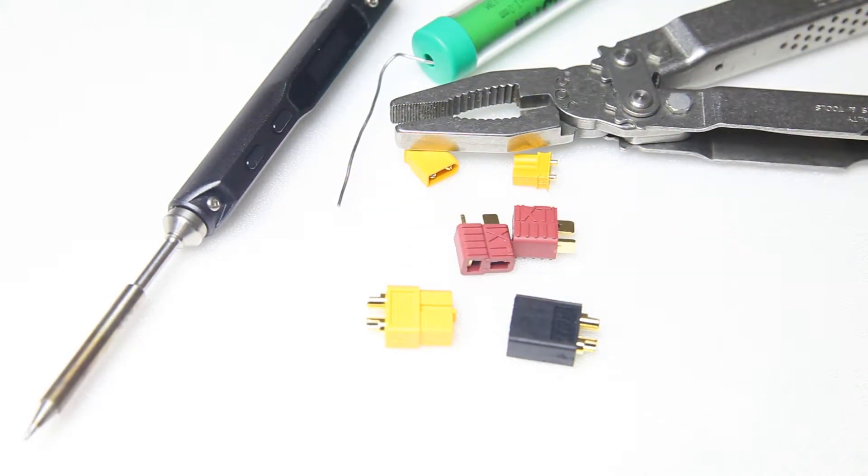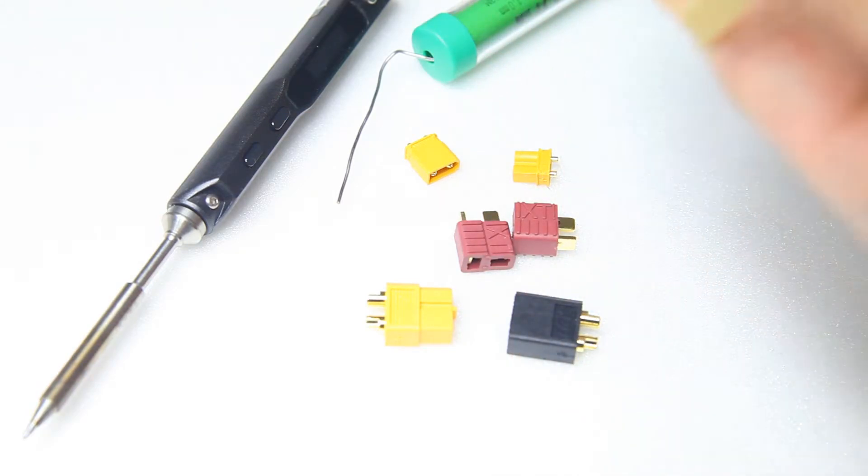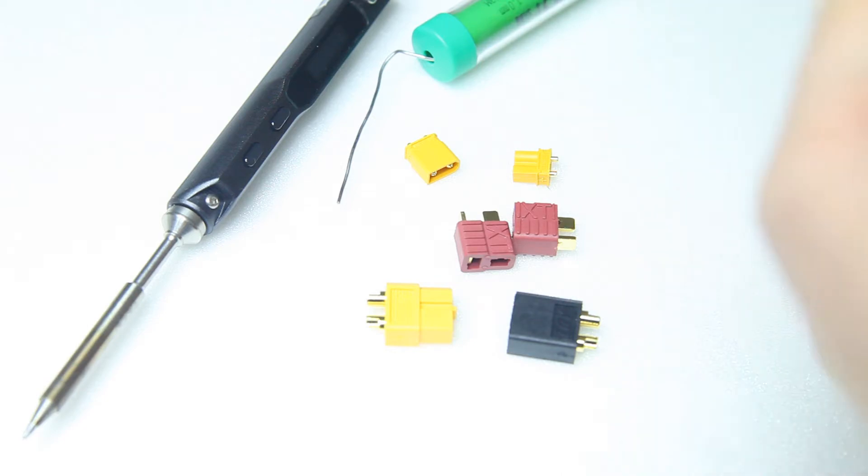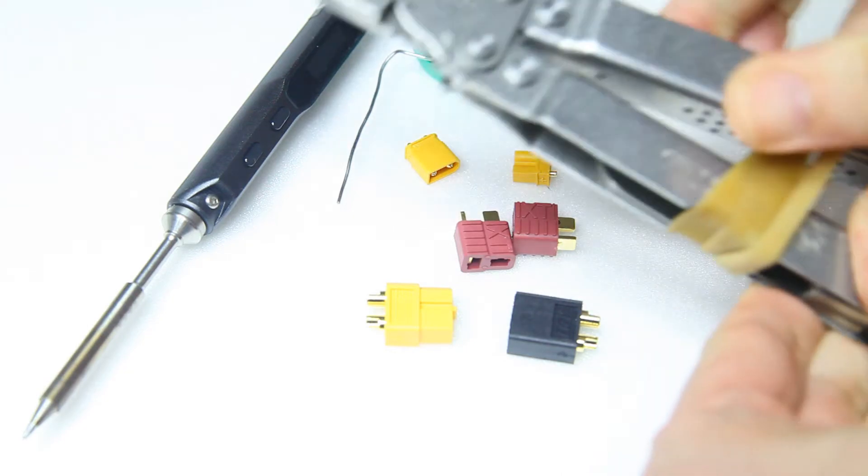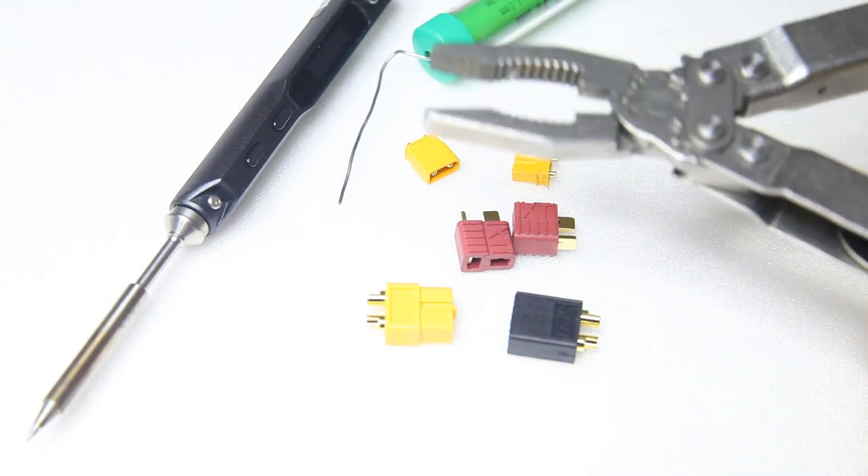Now, what you do is you take the rubber band and you wrap it around the handle of your pliers, so that it becomes a self-clamping pair of pliers as you can see.